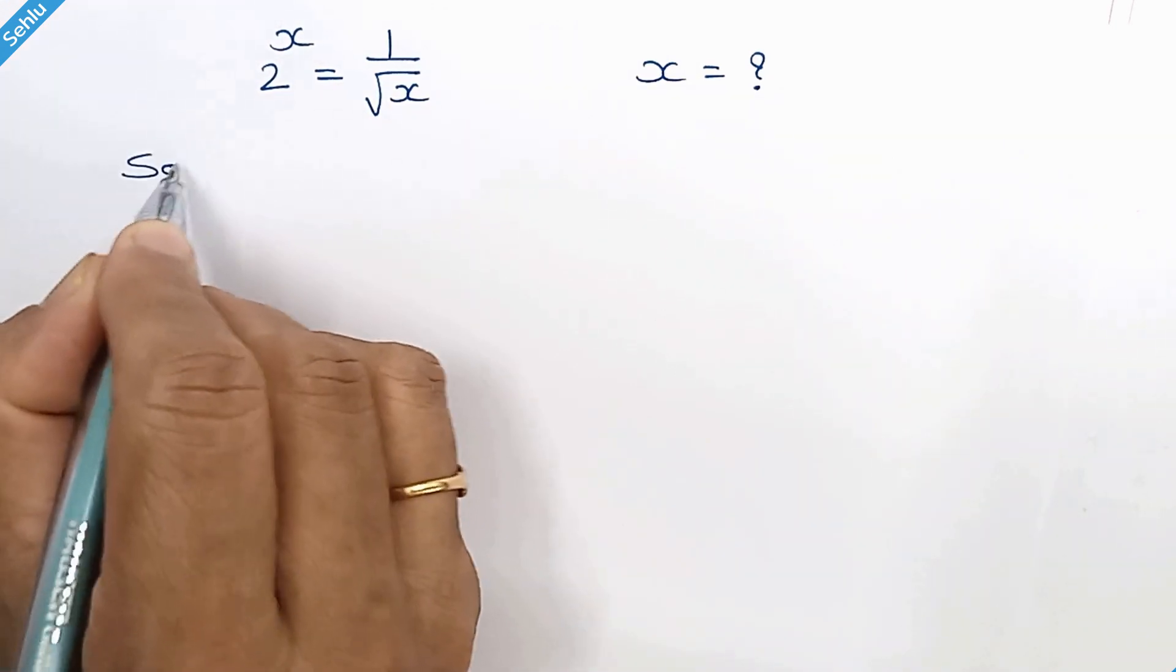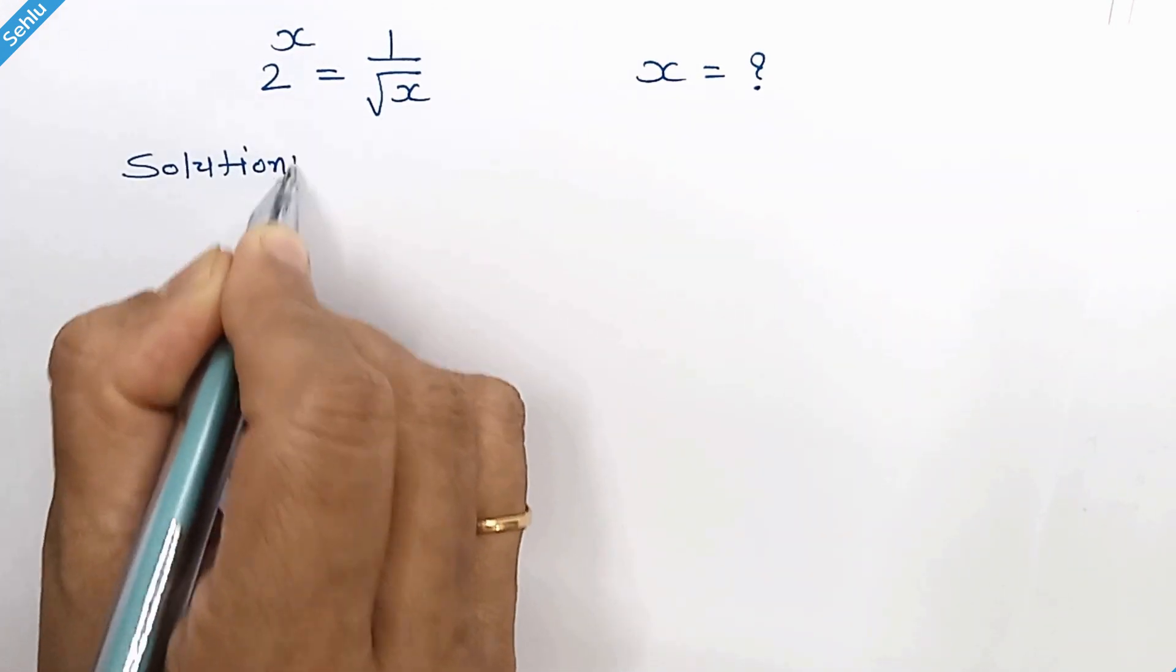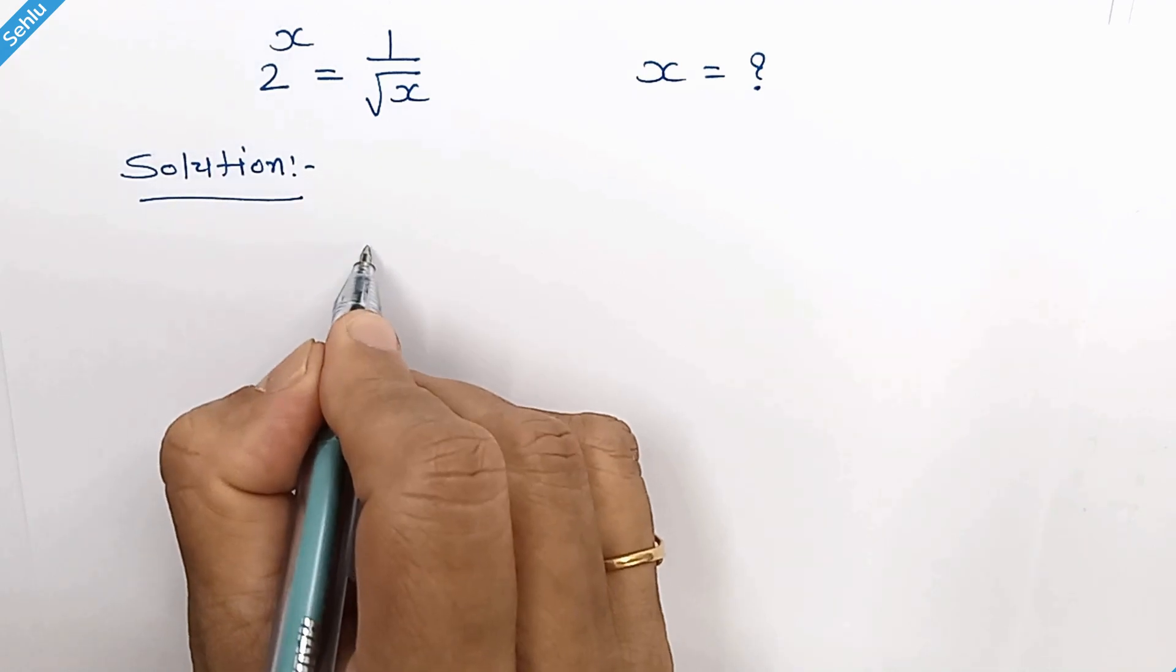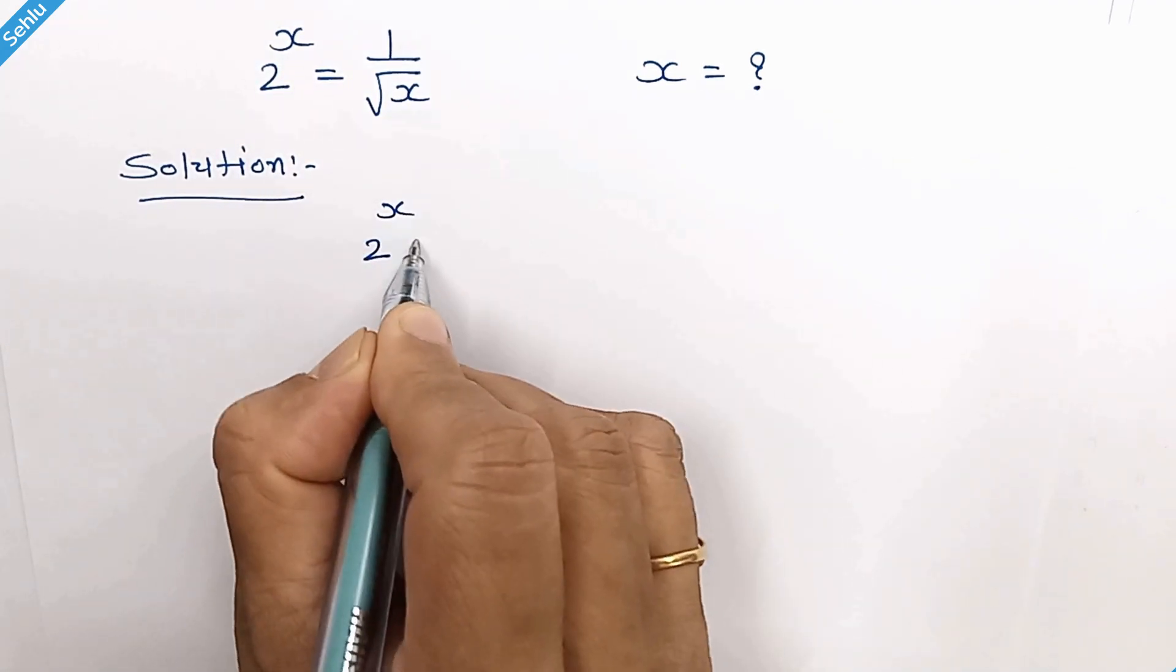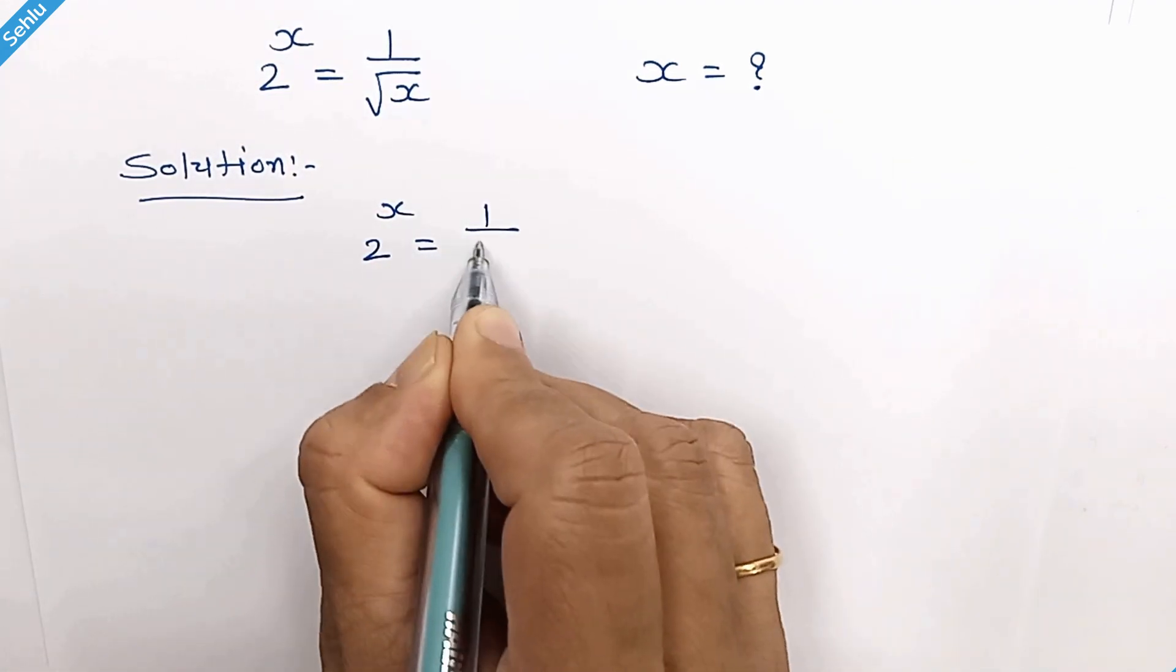How do we solve this? Let's see. Our question is 2 to the power x is equal to 1 over square root of x.